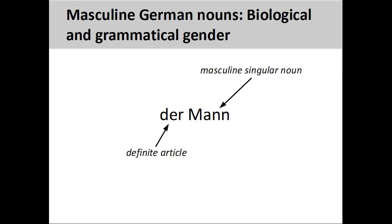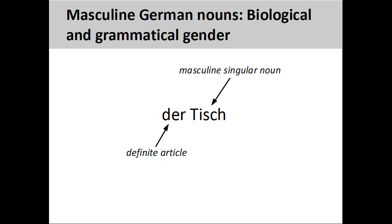When learning German, it is important to memorize the definite article with the noun. The German noun 'Tisch,' meaning table, has a masculine grammatical gender, so its definite article is 'der.' Here, the grammatical gender does not indicate any biological gender of the noun — there is nothing particularly male about a table. Although the grammatical gender of German nouns is sometimes difficult to determine, there are some rules that can help you. Let's take a look at them now.